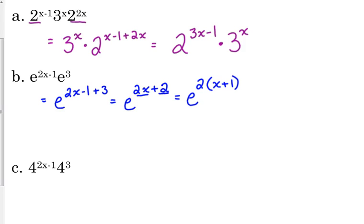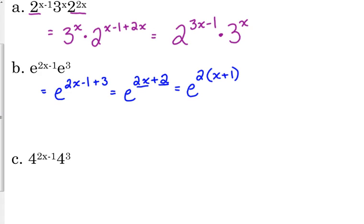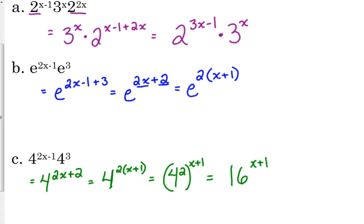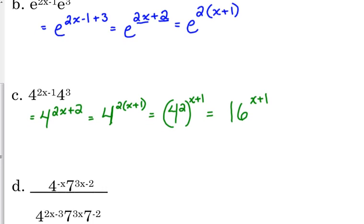Because in the next example, all I've done is replaced the e's with 4's. Same premise, same problem. But I've replaced the e's with 4's. So I know that this is equal to 4 to the 2x plus 2. I can factor out a 2. And then, like I did at the beginning when I rewrote that 5 to the negative x, I'm going to do that here. I can split this up. And I can say, well, that's 4 squared to the x plus 1. And 4 squared is 16. So 4 to the 2x minus 1 times 4 cubed is equivalent to 16 to the x plus 1. I ended up with a completely different base than I started with. It is possible. It doesn't happen a whole lot, but it is possible.